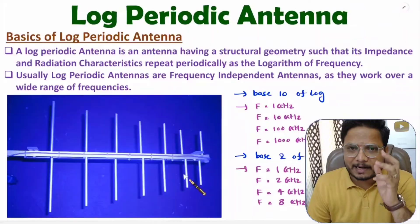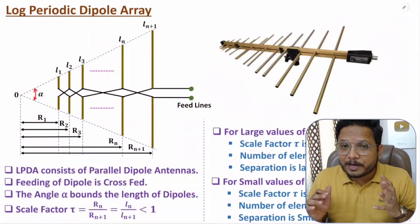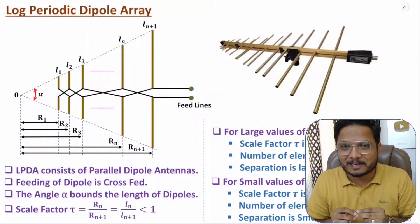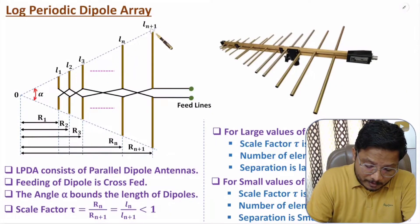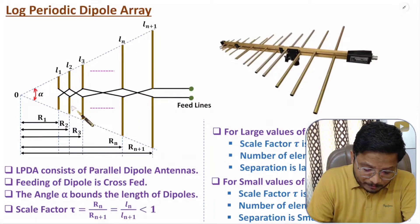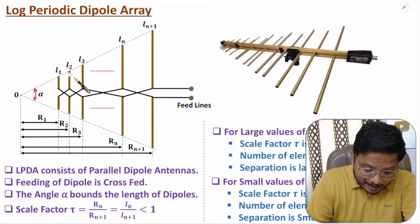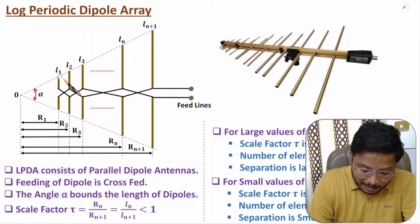Now let me explain the log periodic dipole array. In a log periodic dipole array, dipoles are connected in parallel, but the geometry is quite interesting. We have N+1 dipoles in total: the first, second, third, up to the Nth and N+1th dipole. The length of the dipole increases as you move in this direction — the first dipole has length L1, the second has L2, the third has L3, and so on.